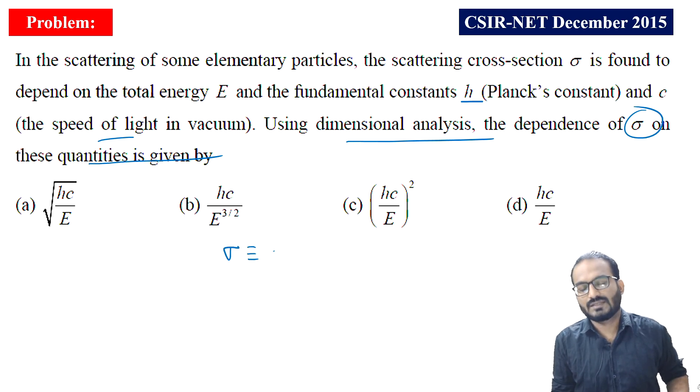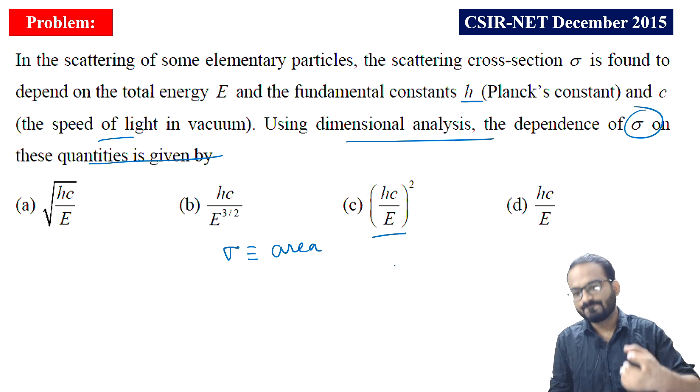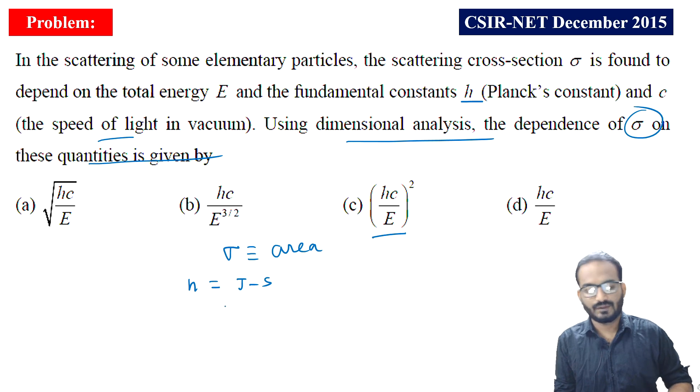You are given hc/E to the root and many other things. Now to find sigma—what is sigma? Sigma is basically, the dimension of sigma is the dimension of area. Now if you can calculate what among these quantities gives you the dimension of area, that will do our work. H has unit joule per second, C has the unit meter per second, and energy has the unit joule. We need area, which means meter square.